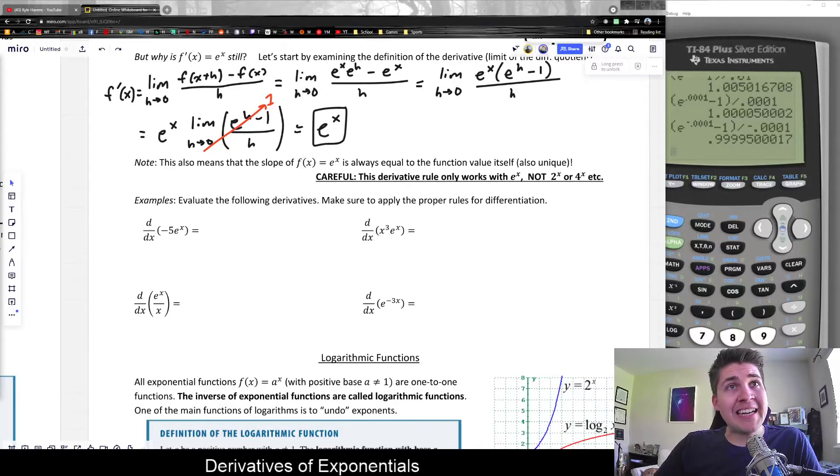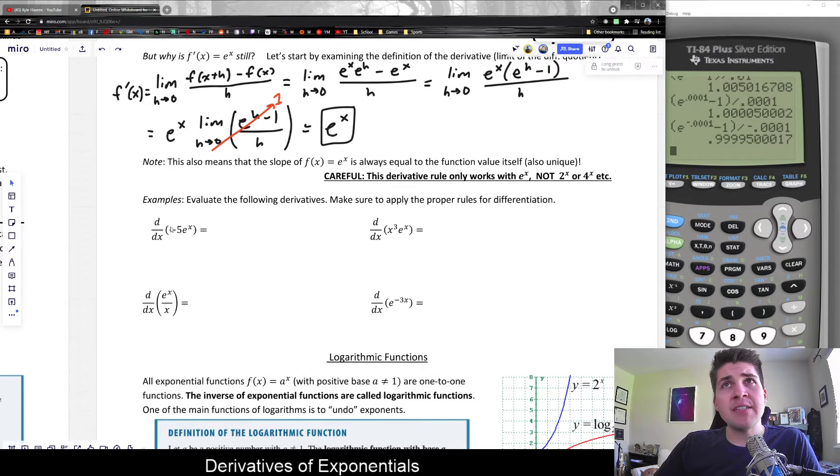Let's do a few examples of finding derivatives involving e to the x. So first of all, we have d/dx of negative 5e to the x.